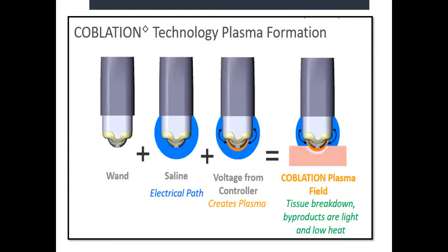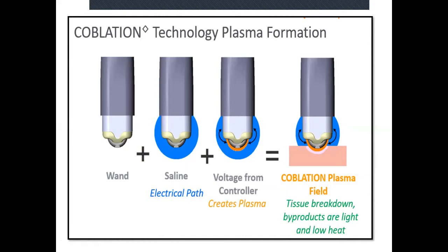This describes the same process: the electric path voltage from the controller — the console and the generator — creates the plasma field wherein tissue breakdown produces light and low heat. Once that energy is generated at the tip of the wand, the plasma actually breaks the covalent bonds between protein molecules — that's how coblation is executed.